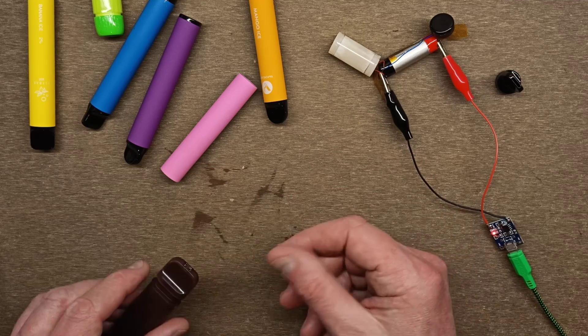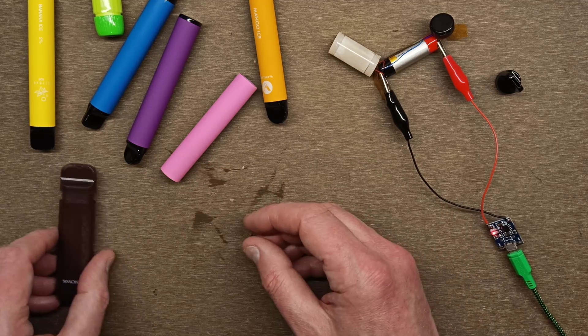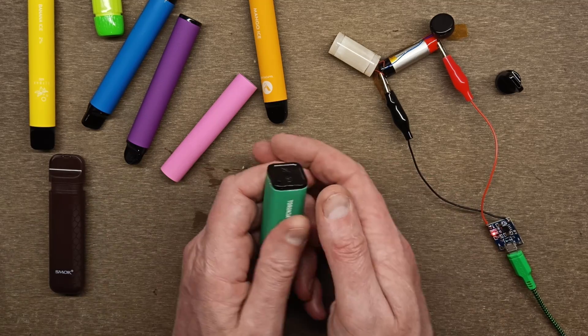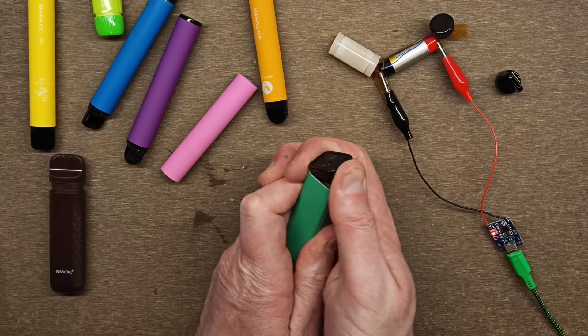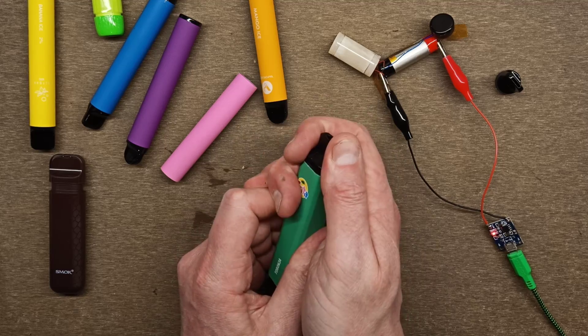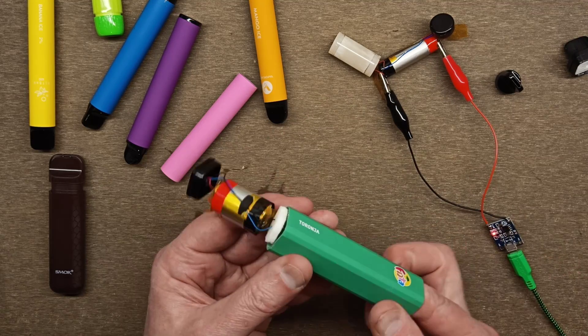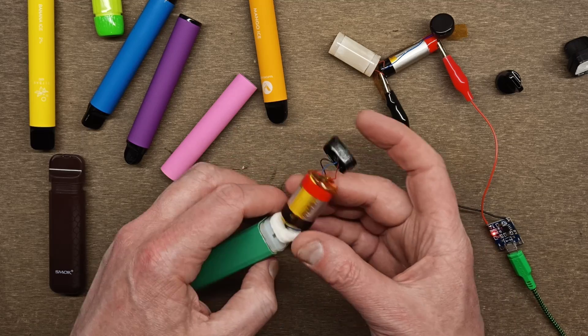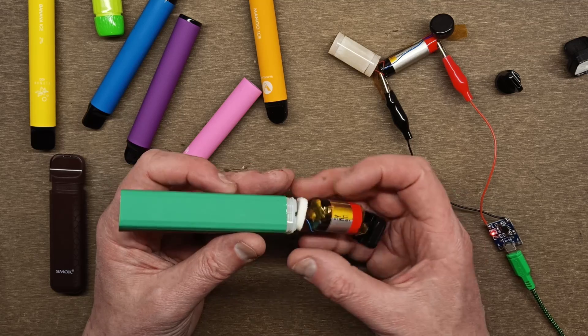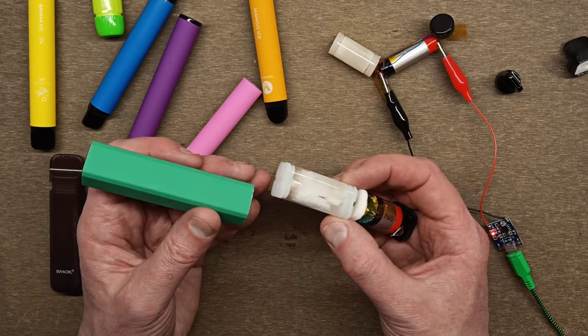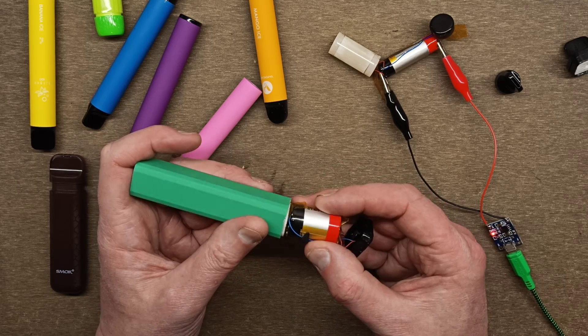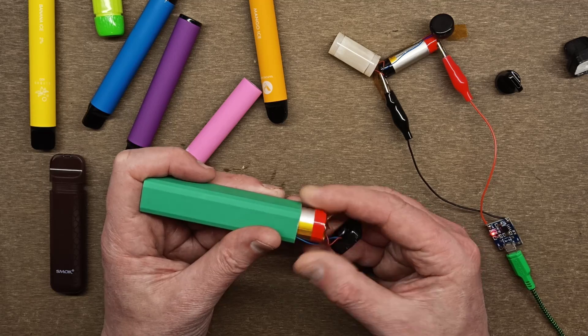This is where it gets really huge. This one, if I pop the end off and slide the guts out, is a much higher capacity. Look at the size of that cell. That is a 1.5 amp hour cell, that's huge. Likewise, the actual reservoir in it is massive as well. These things are designed to last longer.